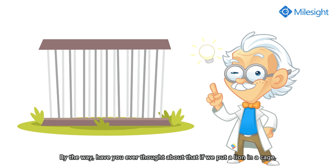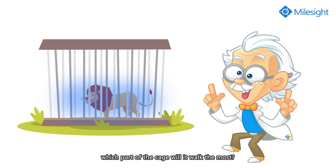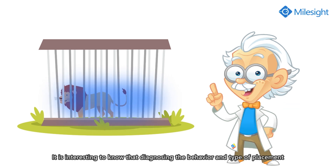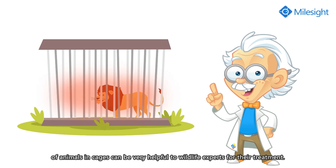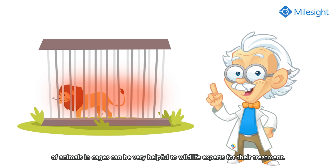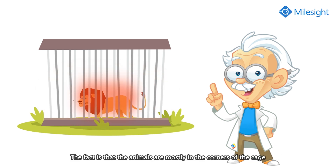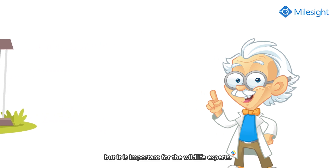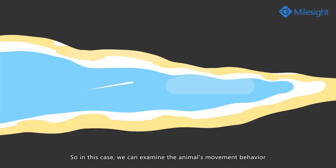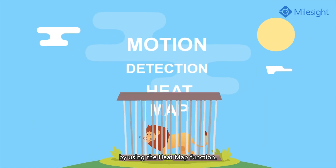By the way, have you ever thought about what happens if we put a lion in a cage — which part of the cage will it walk the most? It's interesting to know that diagnosing the behavior and placement of animals in cages can be very helpful to wildlife experts for their treatment. The fact is that animals are mostly in the corners of the cage or in the middle of it. This may not be an important issue for us, but it's important for wildlife experts. So in this case, we can examine the animal's movement behavior by using the heatmap function.